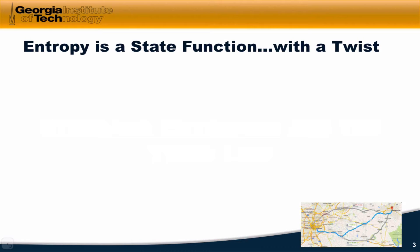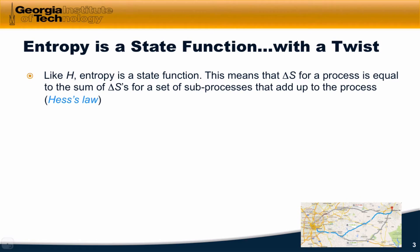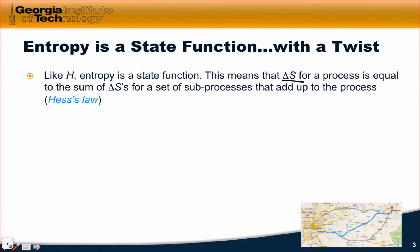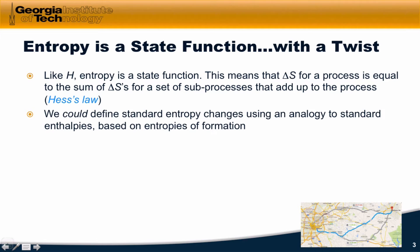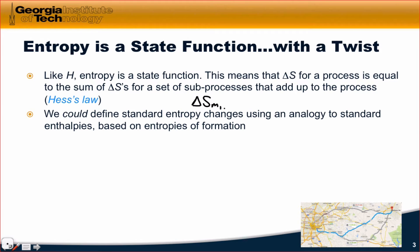Entropy is denoted with a capital S and, just like all of the capital letters in thermodynamics, it's a state function. This means we can do the same thing with entropy that we've done with enthalpy. We can take a set of processes whose delta S's are known, add them together, and the corresponding sum of the delta S's will be equal to delta S for the sum of the processes. This is essentially Hess's law applied to the state function entropy. We could set out to define standard entropy changes of formation, delta S sub F, using an analogy to the standard enthalpies.